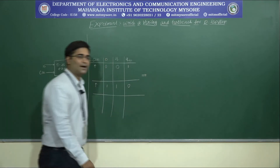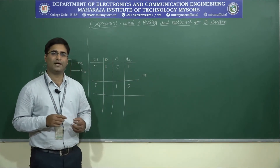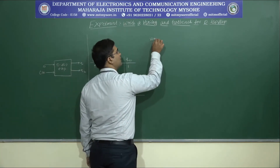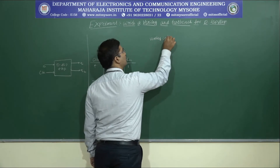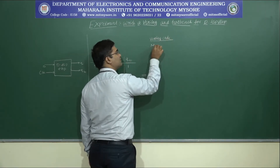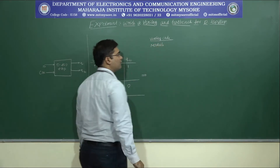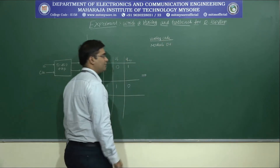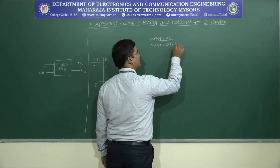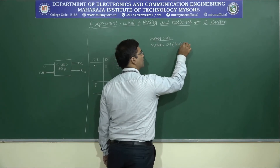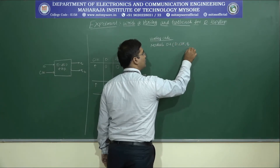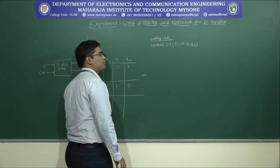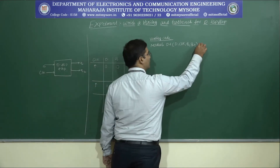We are writing the Verilog code in the behavioral description style. A Verilog code starts with the module keyword followed by the module name — let us define it as DF — followed by the port list: D, clock, Q, and Q-bar. D and clock are the inputs; Q and Q-bar are the outputs.